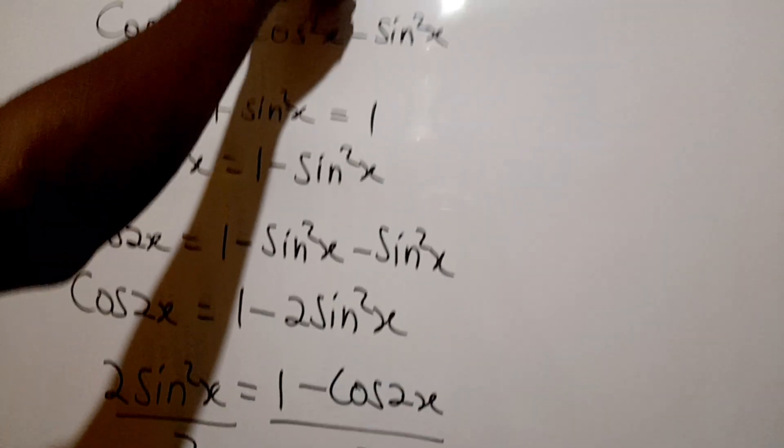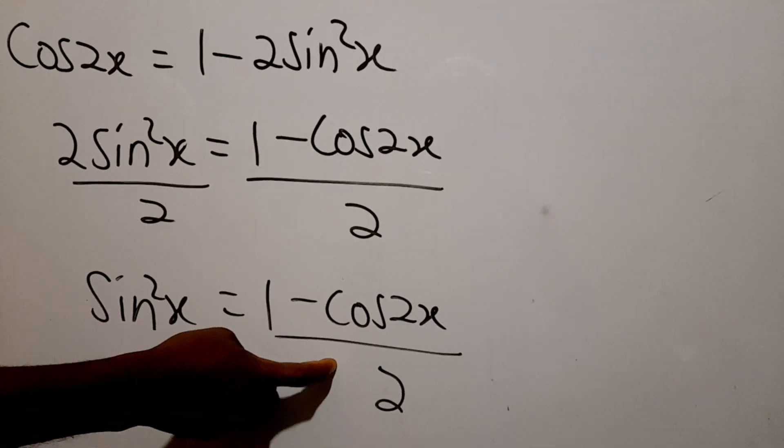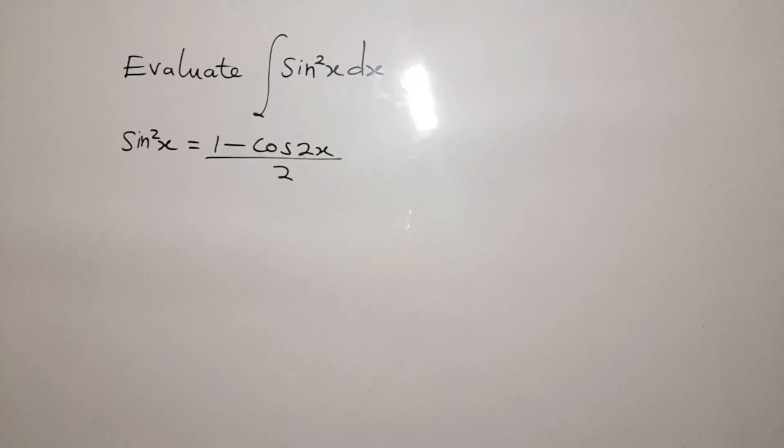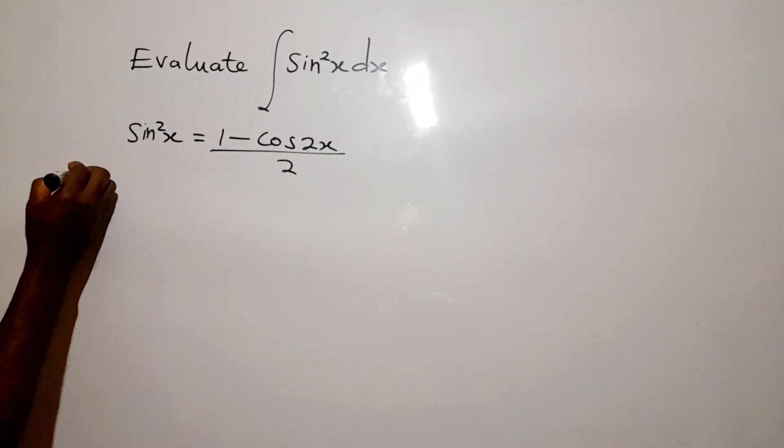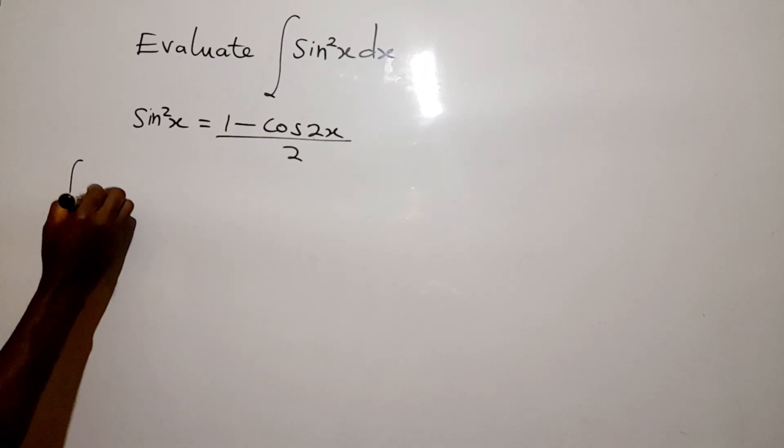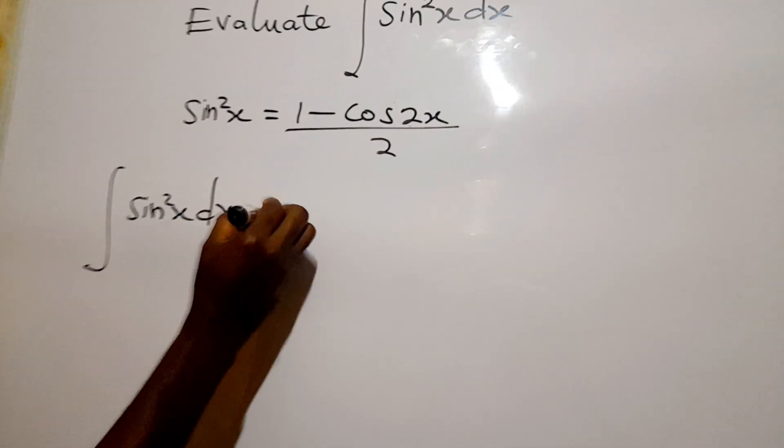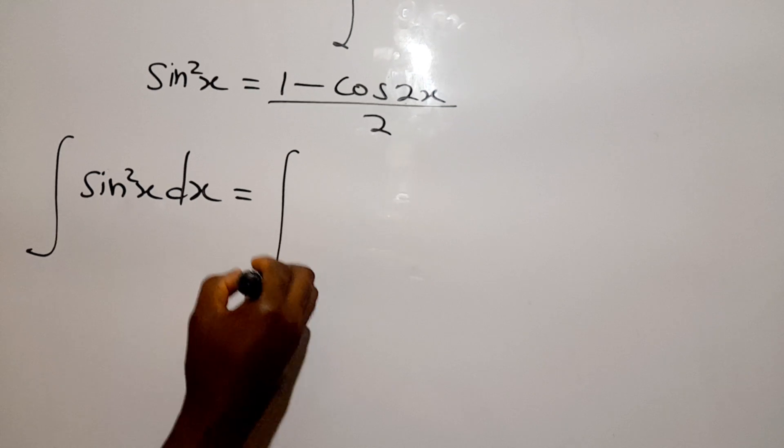So we can say that sine squared x is equal to one minus cos 2x all over two. So in our problem, in place of sine squared x, we substitute one minus cos 2x all over two.